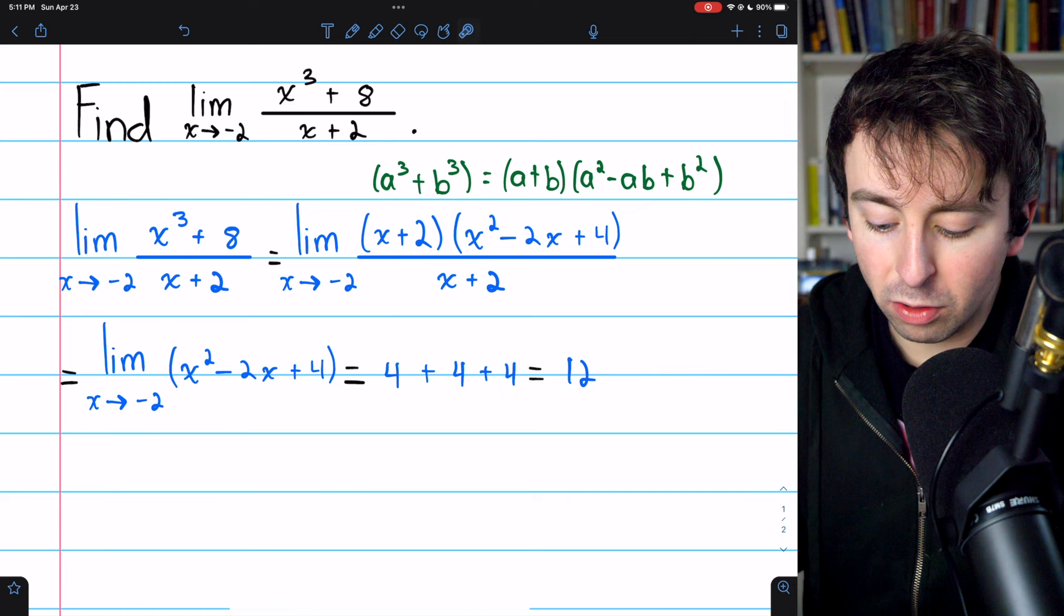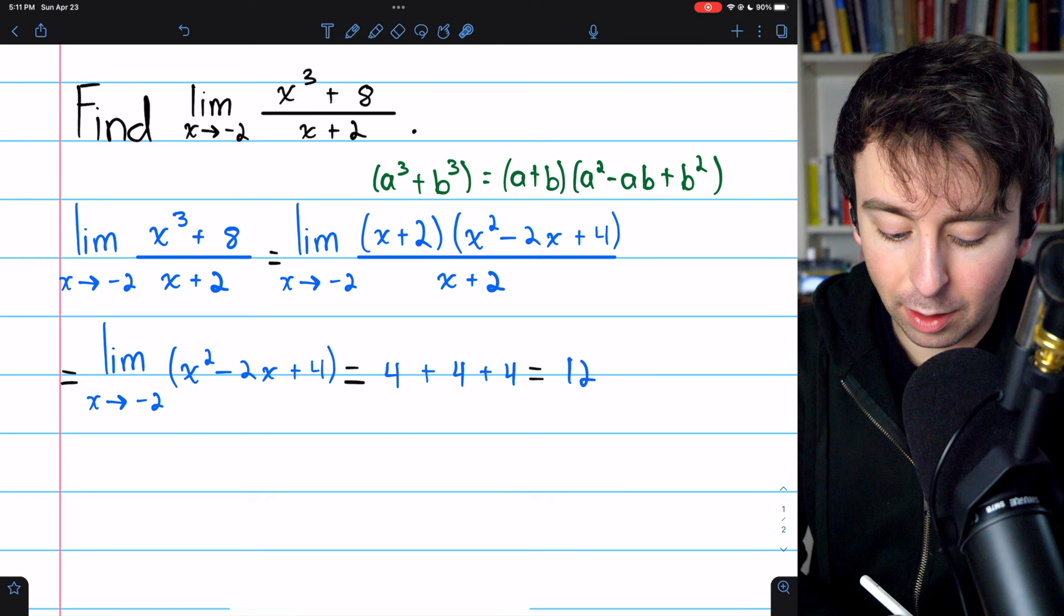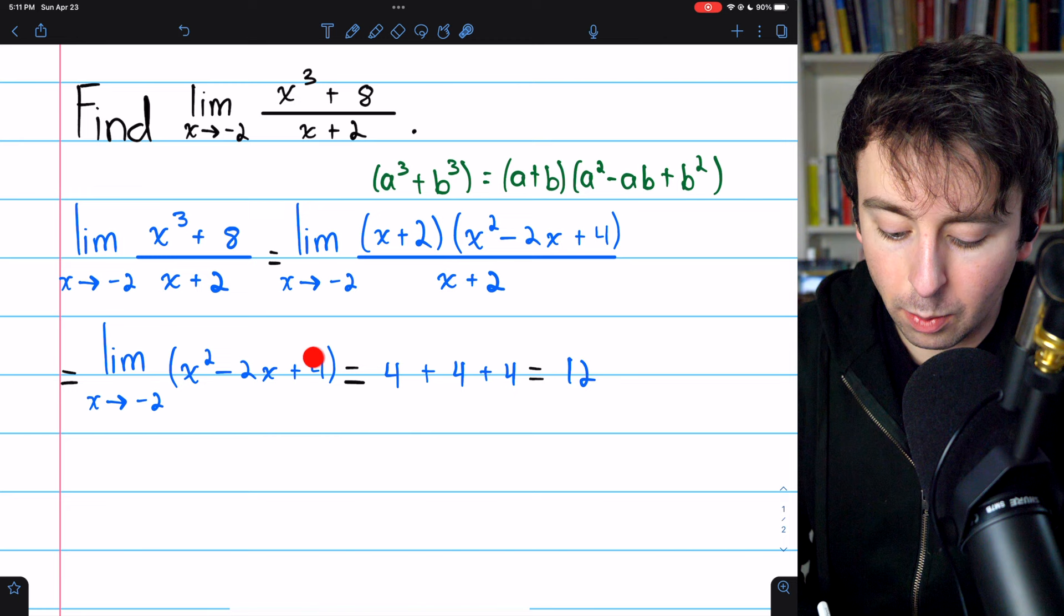At this point, we can plug in the negative two. Negative two squared is four. Negative two times negative two is plus four, and then we still have that plus four at the end. And so the limit is equal to 12.